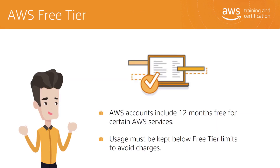Some AWS services come with a free trial period — AWS calls this the AWS Free Tier. The Free Tier is designed to give you hands-on experience with a range of AWS services at no charge. For example, you can explore AWS as a platform for your business by setting up a test website with a server, alarms, and database. When you create an AWS account, you are automatically signed up for the Free Tier for 12 months. When your Free Tier expires, AWS starts charging the regular rates for any AWS services and resources that you are using. To avoid charges, you must keep your usage below the Free Tier limits, and you can track your Free Tier usage and set a billing alarm to notify you if you start incurring charges.